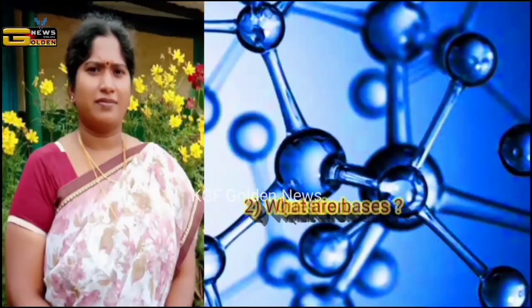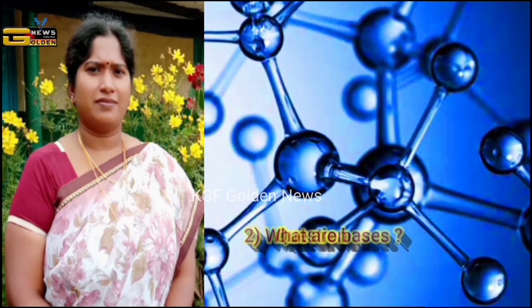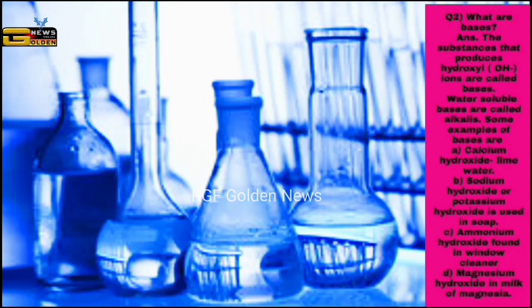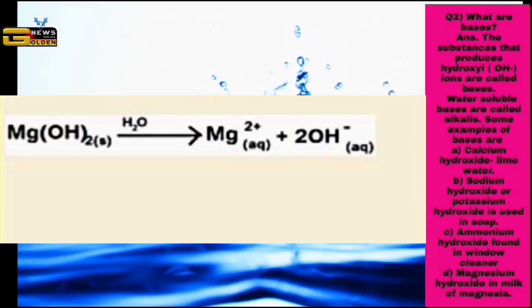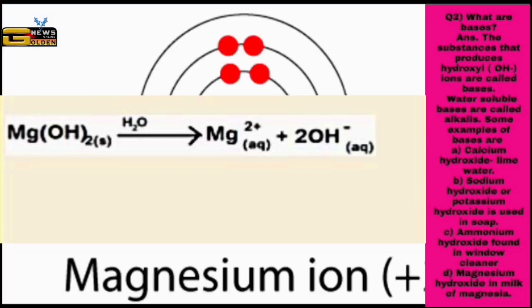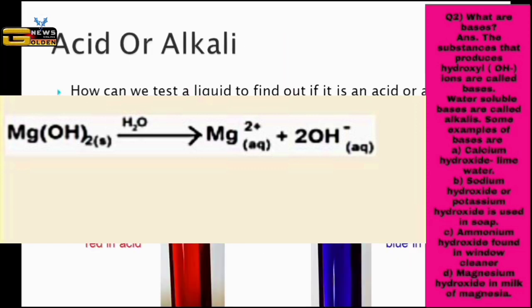Question number two: what are bases? The answer is, the substances that produce hydroxyl ions are called bases. Magnesium hydroxide in water gives magnesium ion and hydroxyl ion. Water soluble bases are called alkalies.